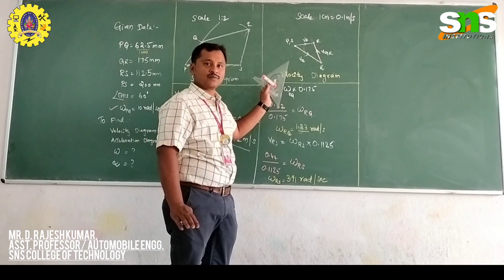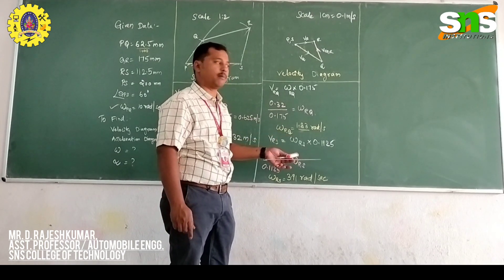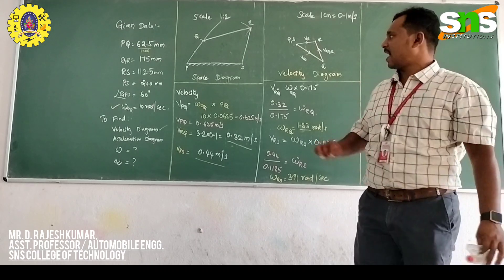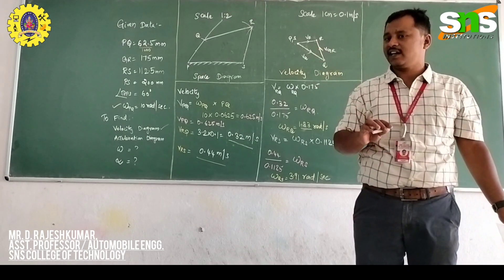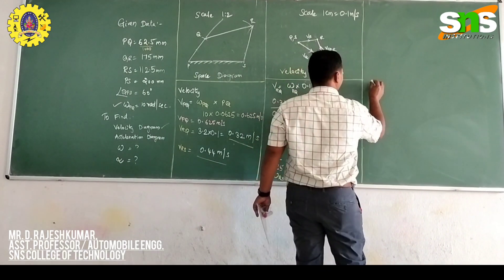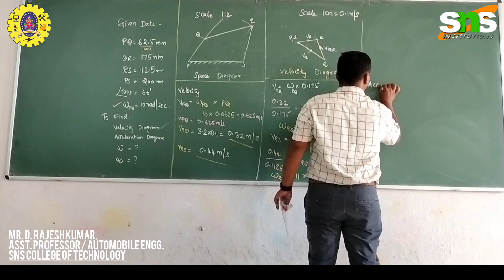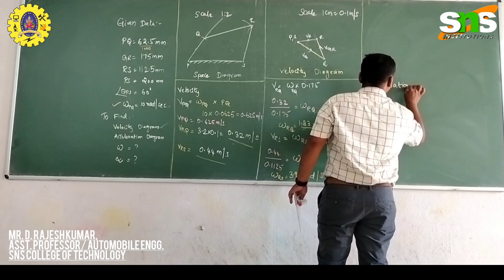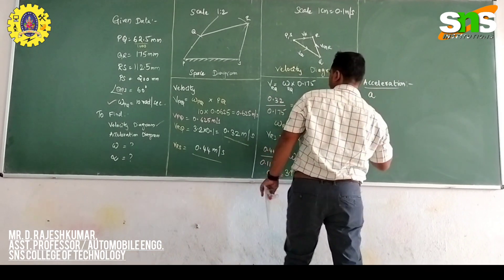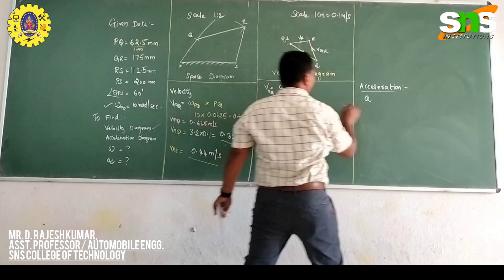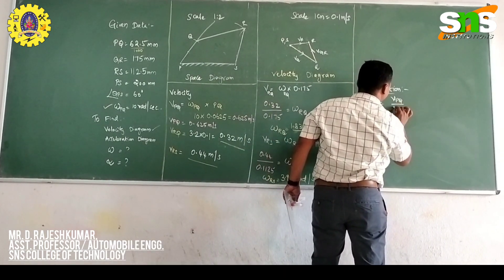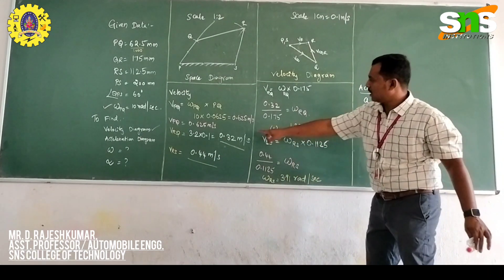That concludes Part 1. Today in Part 2, we calculate the acceleration diagram. To construct it, we first find acceleration values using the formula: acceleration of link PQ = (velocity of link PQ)² ÷ length of link PQ.